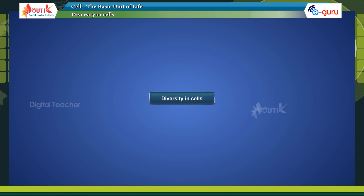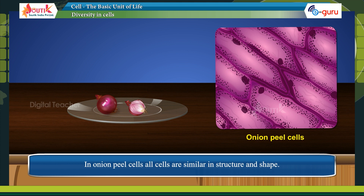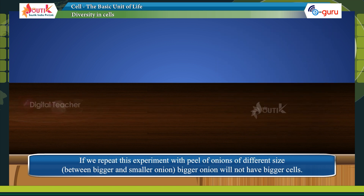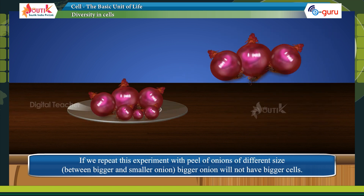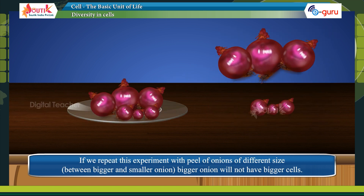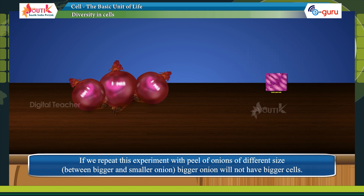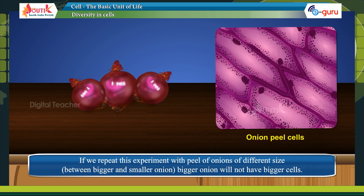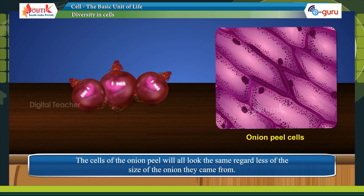Diversity in cells. In onion peel cells, all cells are similar in structure and shape. If we repeat this experiment with peel of onions of different size, bigger onion will not have bigger cells. The cells of the onion peel will all look the same regardless of the size of the onion they came from.